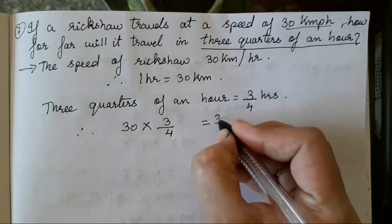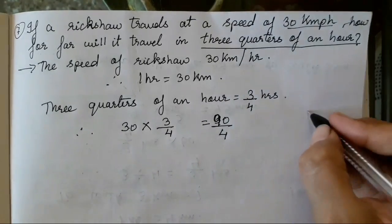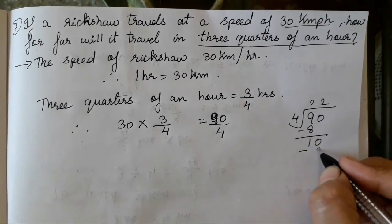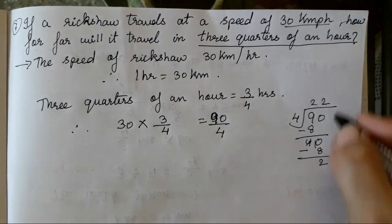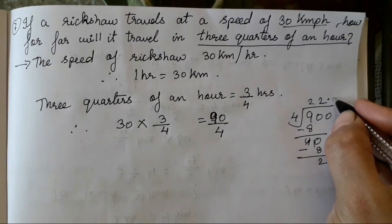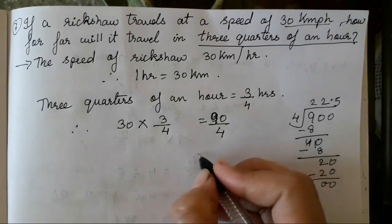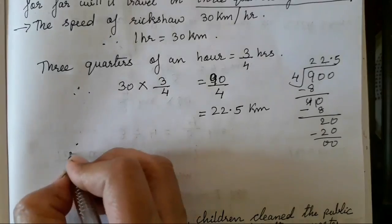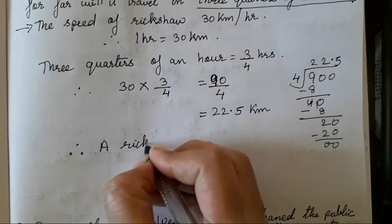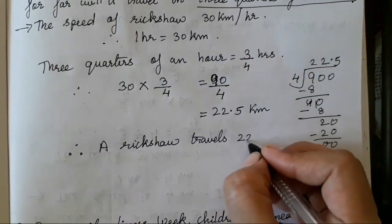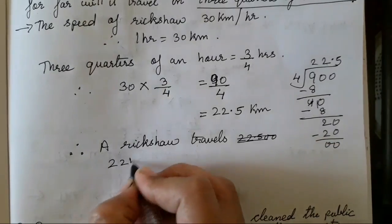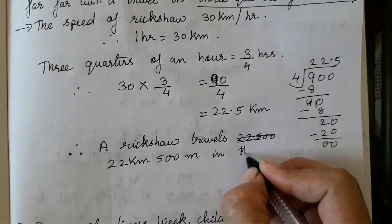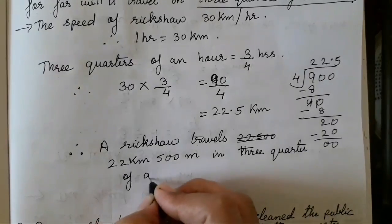Therefore, distance equals 30 multiplied by three-fourths. 30 times 3 is 90, divided by 4: 4 twos are 8, remainder 1; bring down 0 making 10; 4 twos are 8, remainder 2; take decimal point, add 0, 4 fives are 20. So the answer is 22.5 kilometres, which is 22 kilometres and 500 metres. A rickshaw travels 22 kilometres 500 metres in three-quarters of an hour.